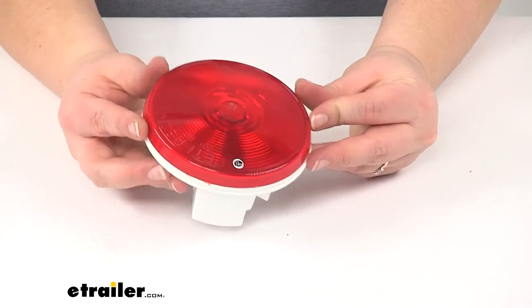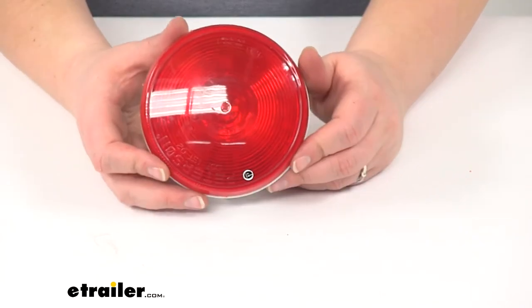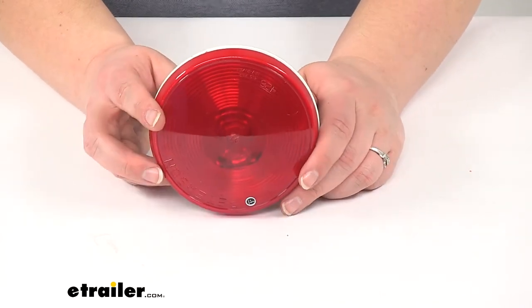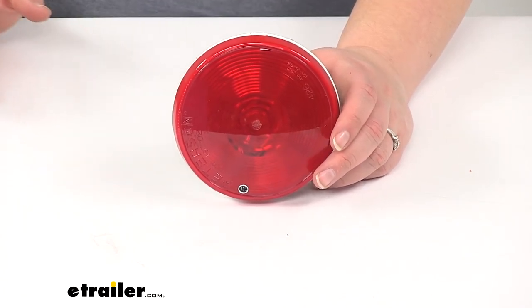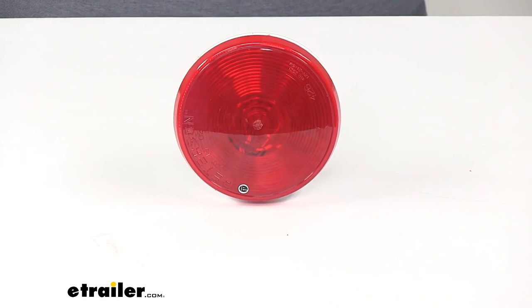And another last thing with this light is that it is a made in USA product. And that's going to do it for our look at the Peterson trailer tail light with the stop, tail, and turn signal with a round design with a red lens.